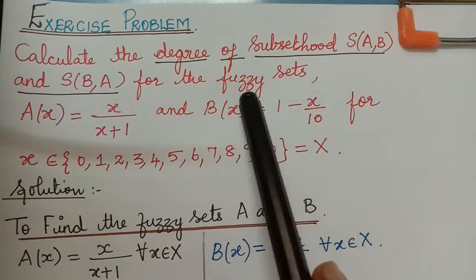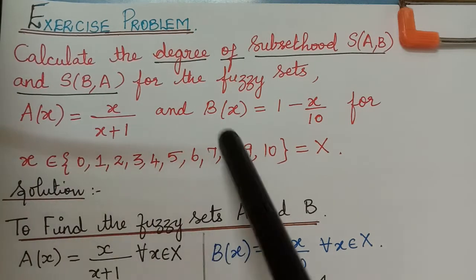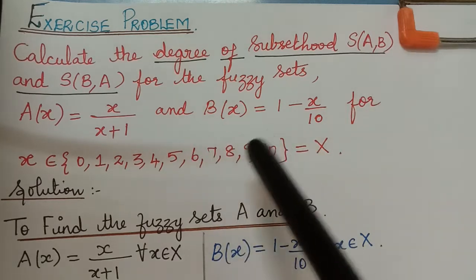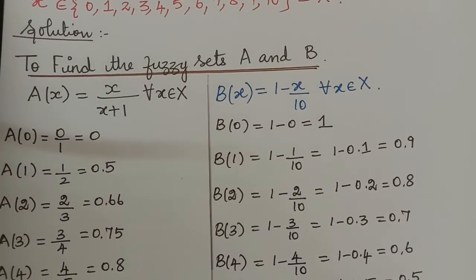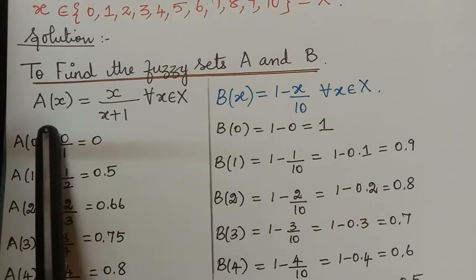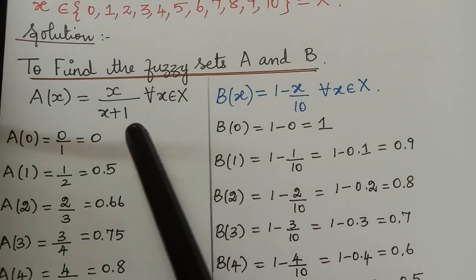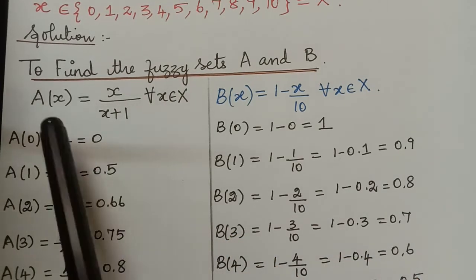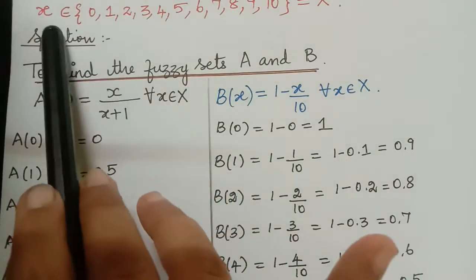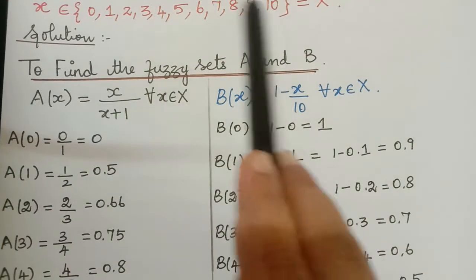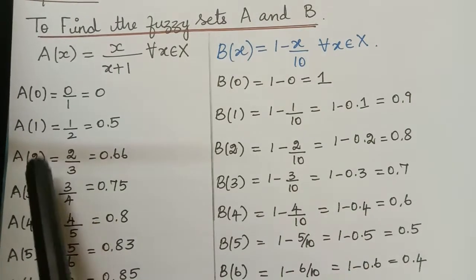Using these two functions we have to write the elements of fuzzy set A(x) and fuzzy set B(x), and then calculate the degree of subsethood. First let us find the fuzzy sets A and B. The membership grade for fuzzy set A(x) is defined by A(x) = x/(x+1). Let us substitute the values of x one by one — x takes values from 0 to 10 — substituting x = 0, then 1, 2, 3, etc.